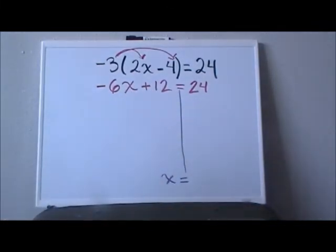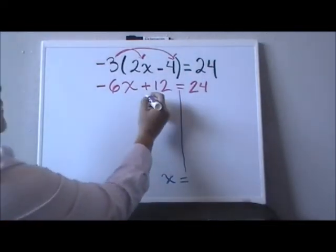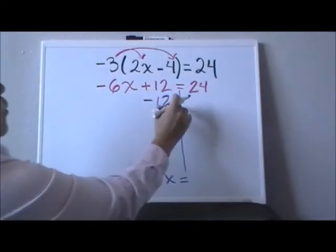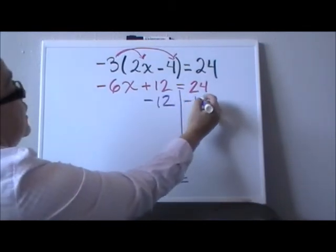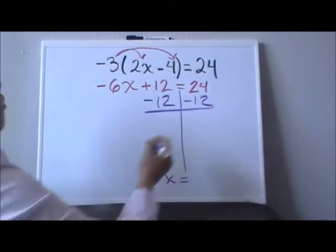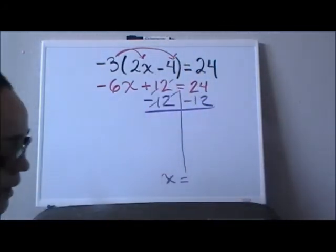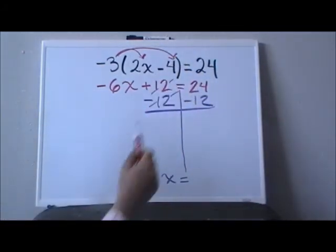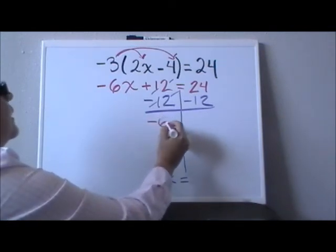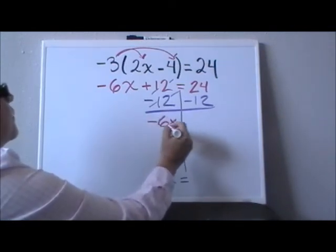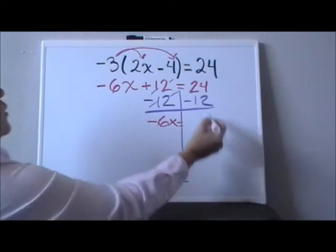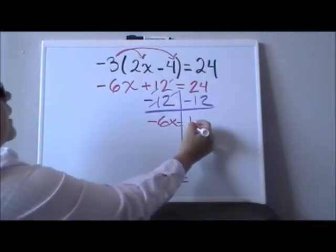We always use inverse operations so we can cancel any number in an equation. So the way that I'm going to cancel this positive twelve is with a negative twelve. What I do to one side, I do to the other. These two are going to cancel, and what I will have left on my left side will be negative six x. That will be equal to twelve.